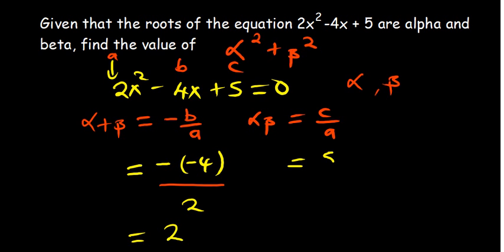And then we have our c, which is 5, our a is 2. So you remain with 5/2 at that point.